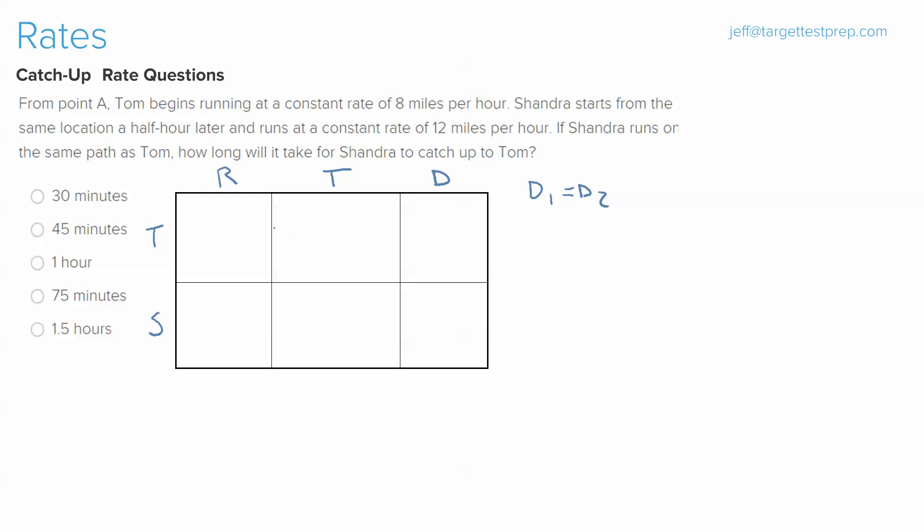So what we know here is that Tom is running at 8 miles per hour and Sandra is running at 12 miles per hour. So clearly the first thing we want to do is fill in our rates.